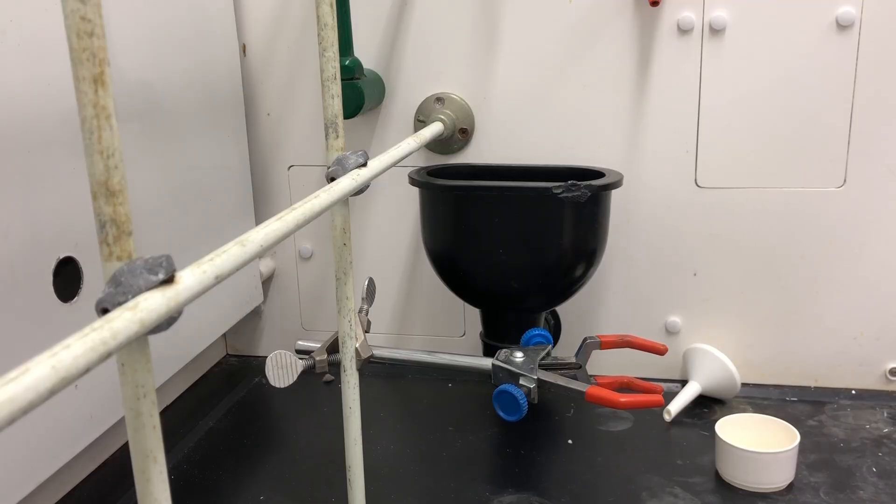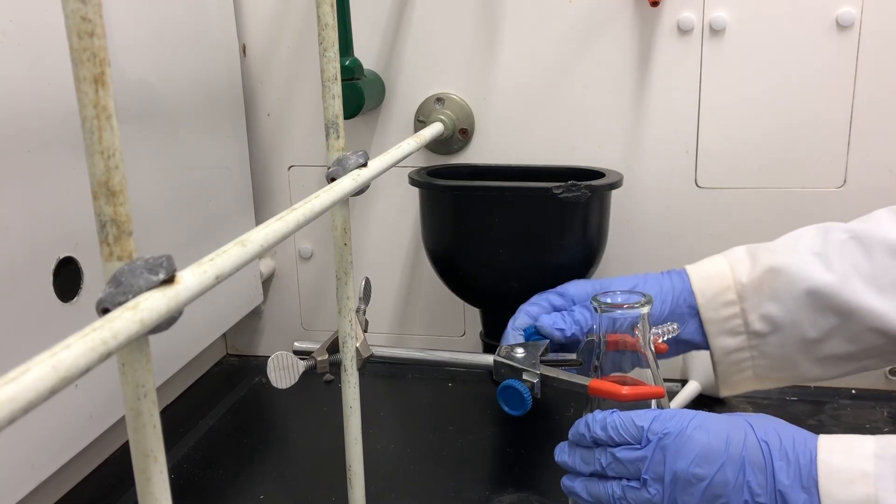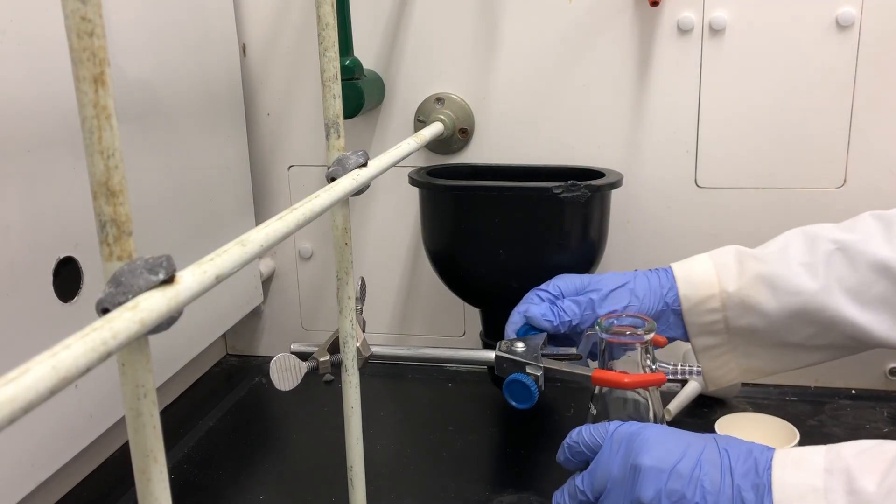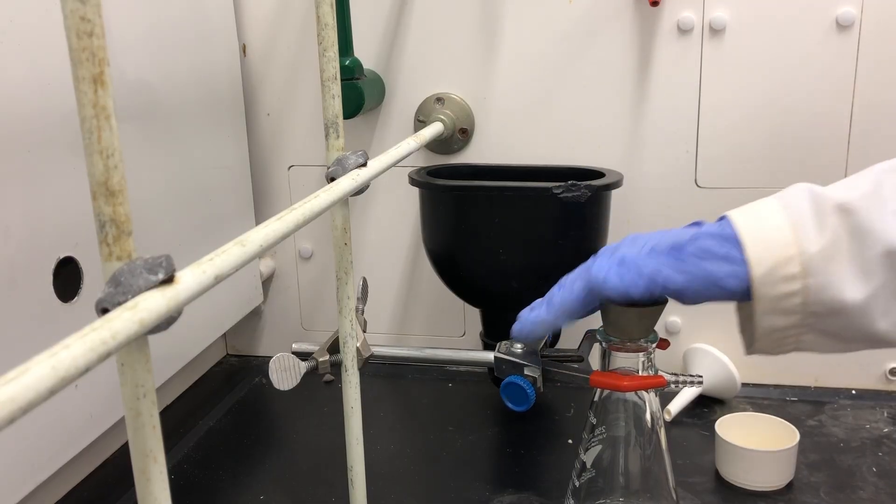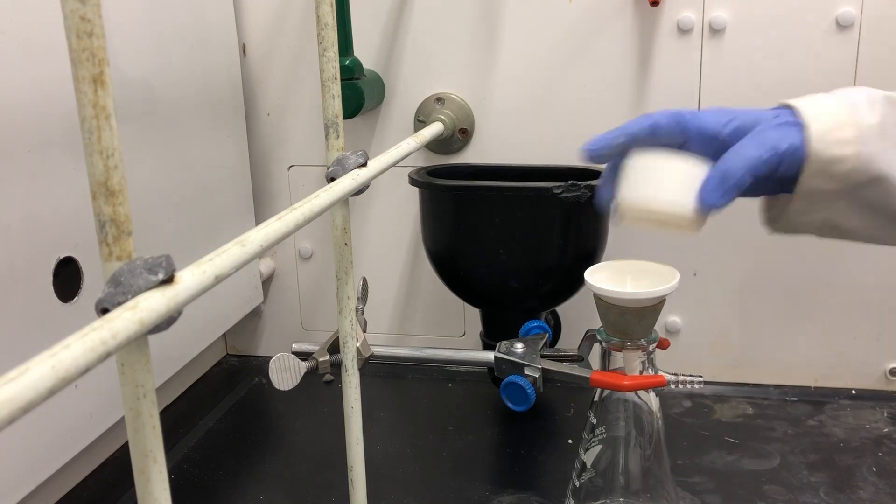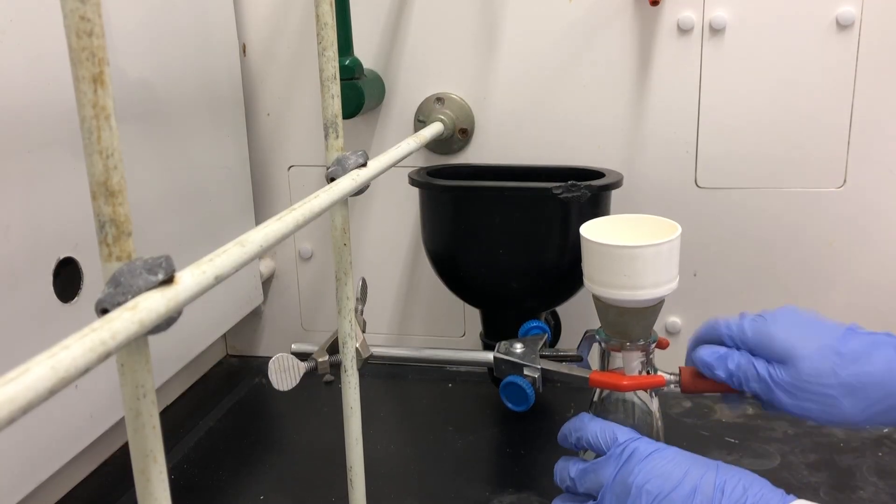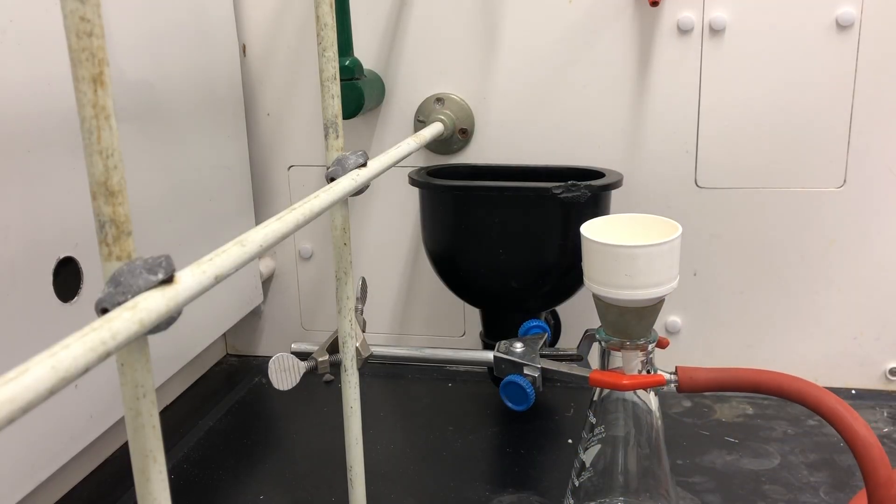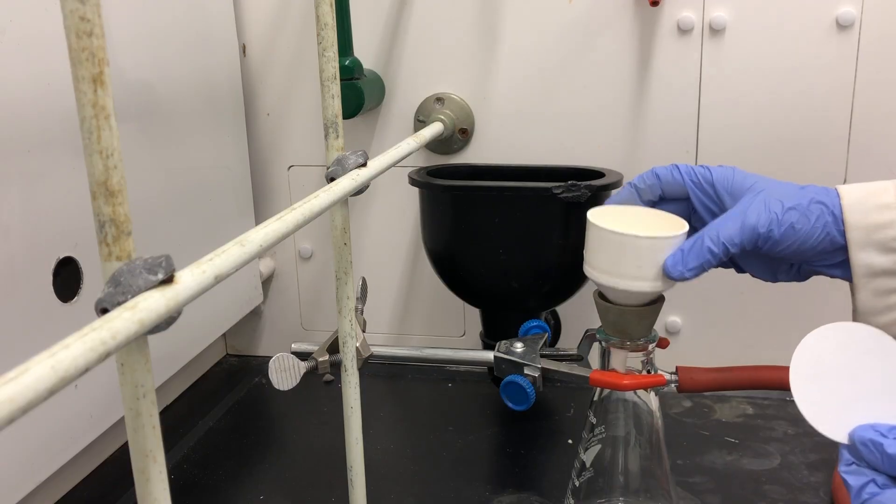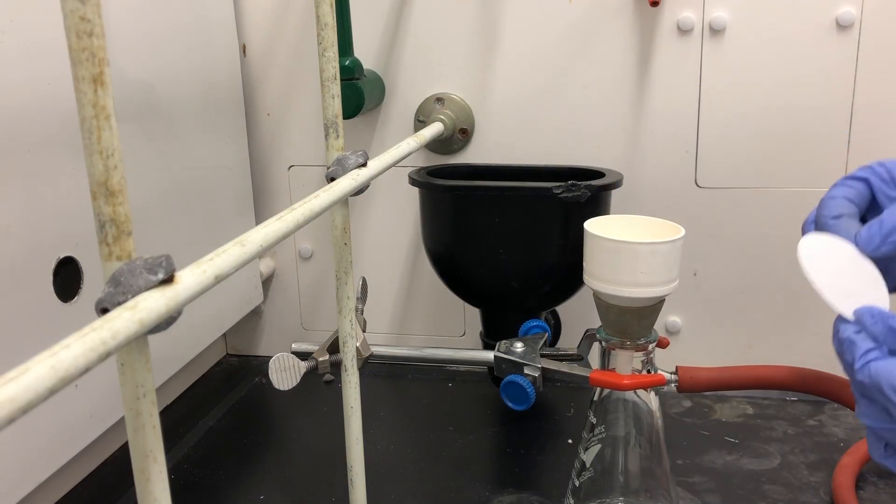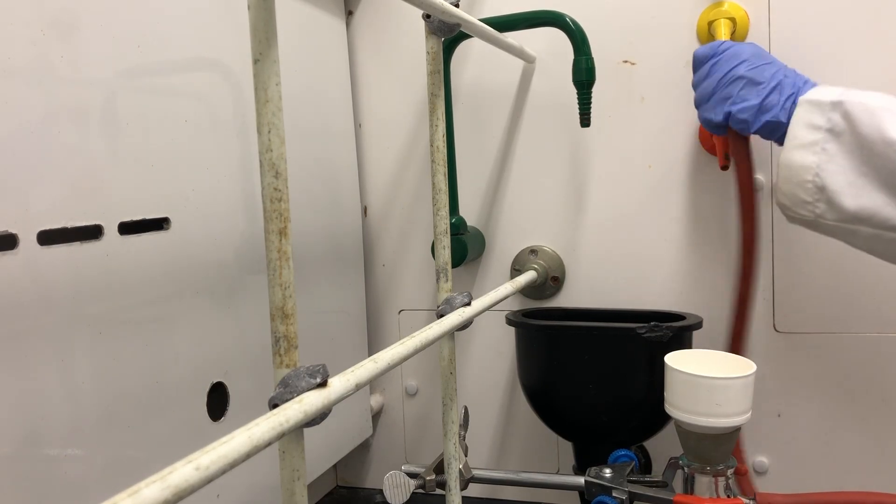We're going to set up the suction filtration. We'll need the three-arm or the side-arm flask to hold the flask when you insert, and then we'll have the two pieces for the Buchner funnel. Then we'll go ahead and clamp it right into the vacuum.